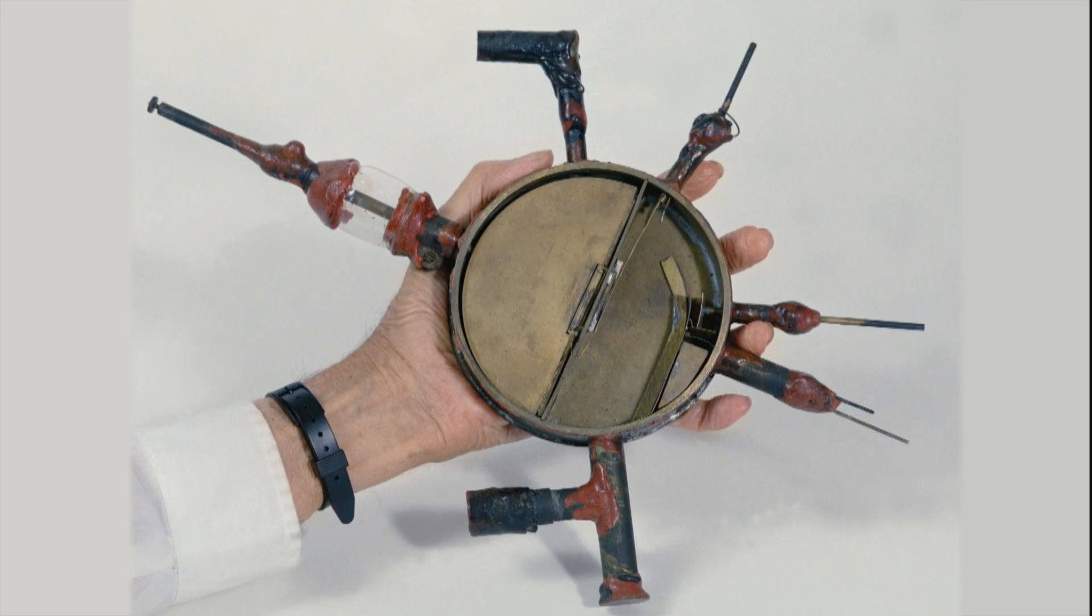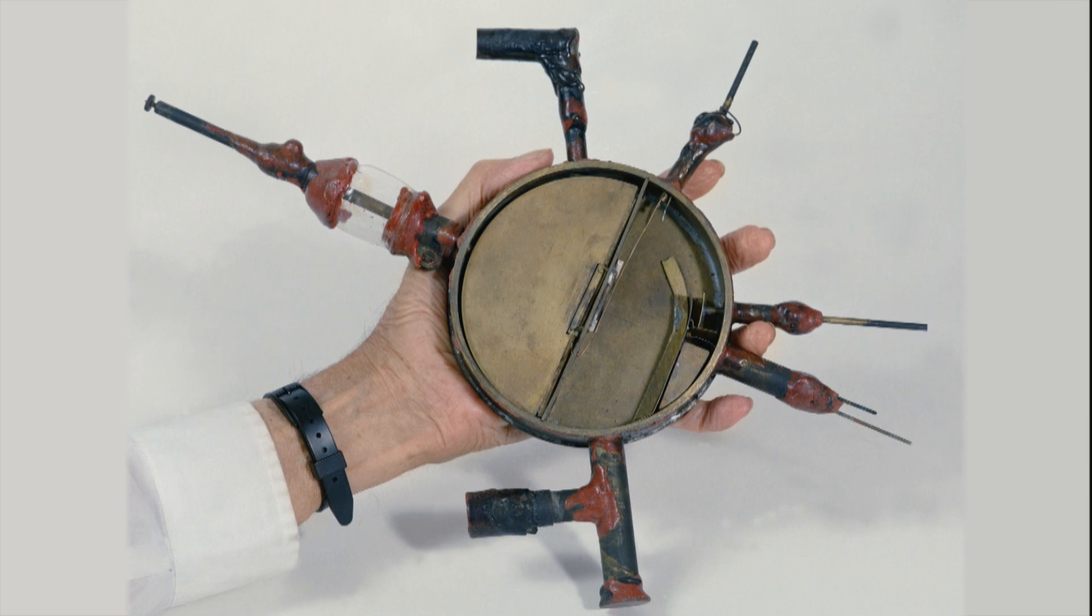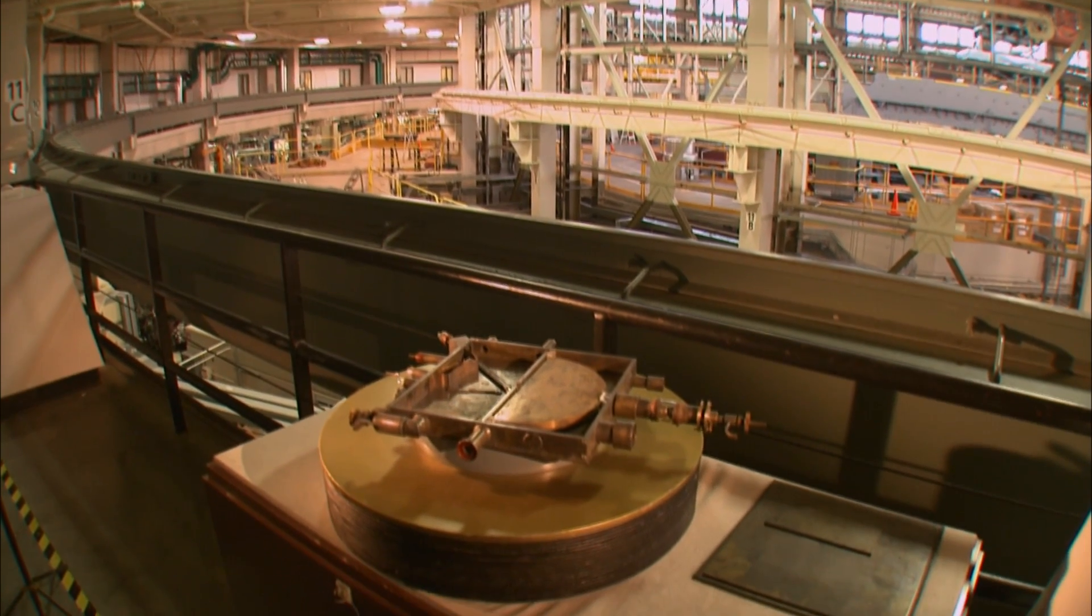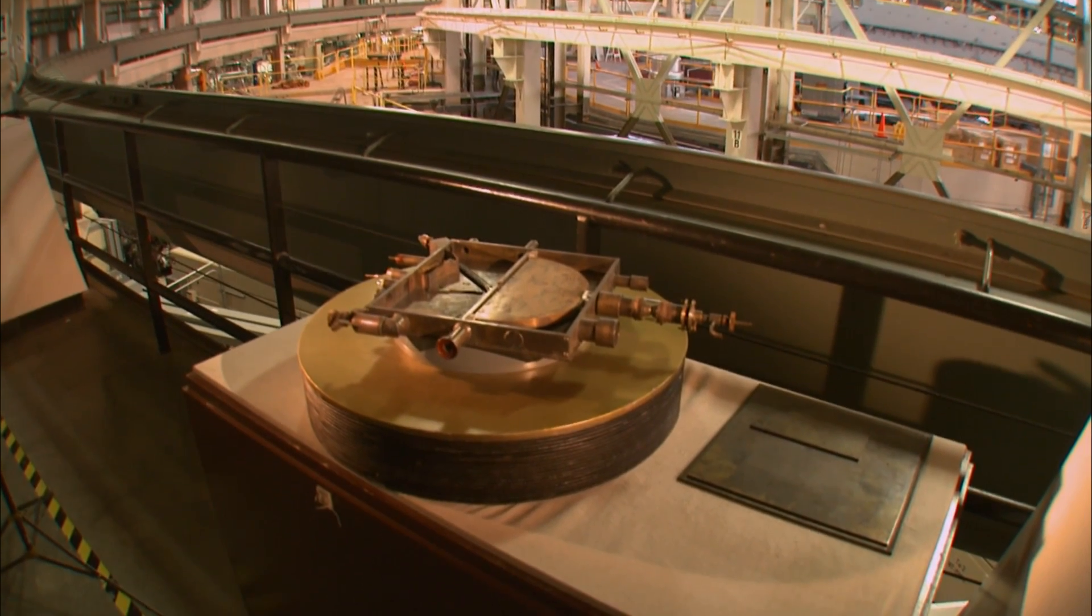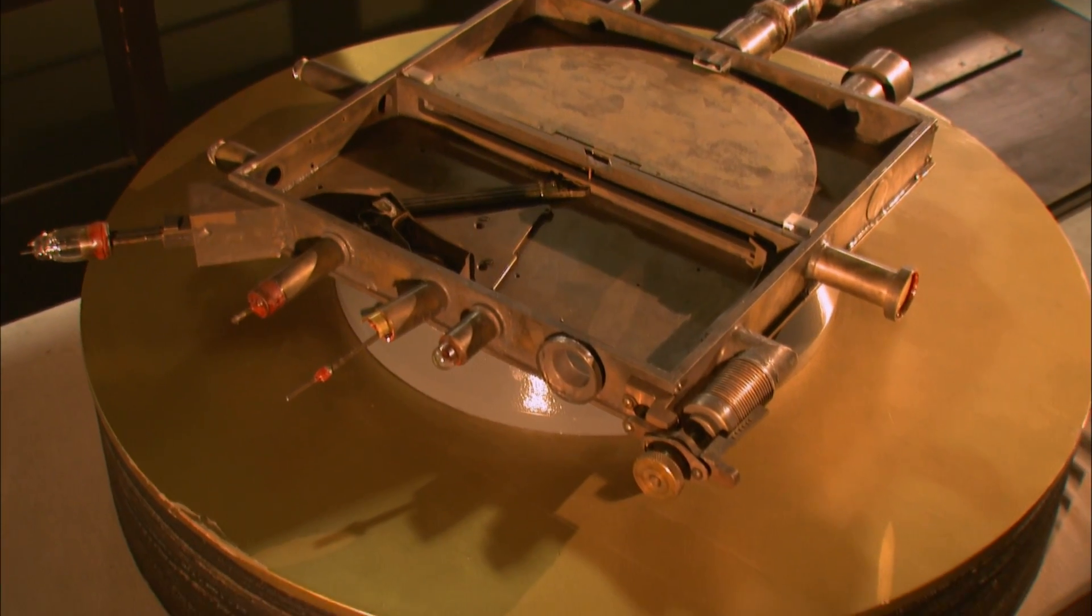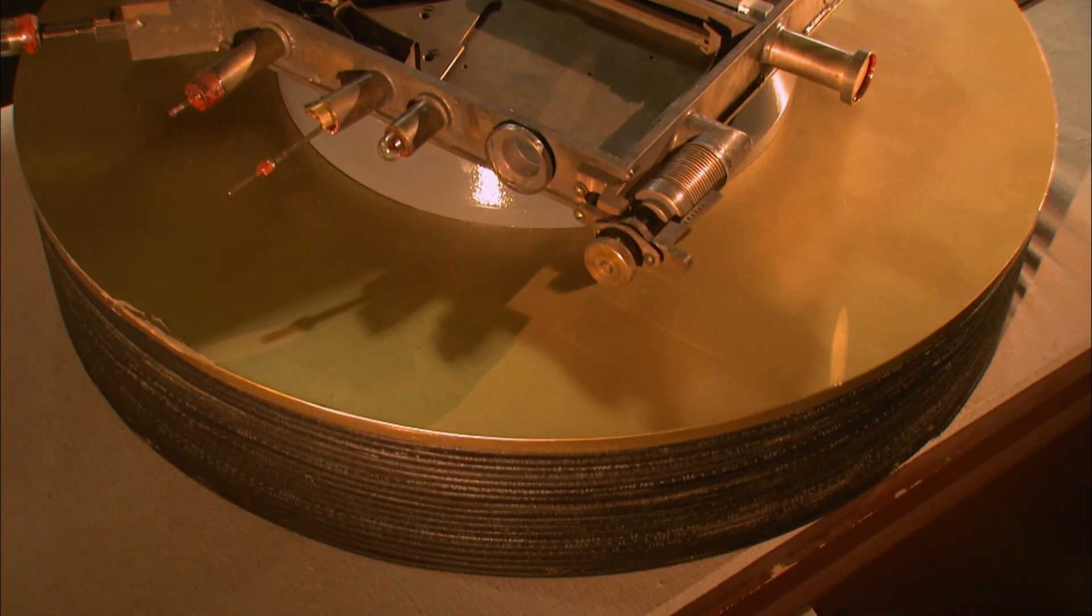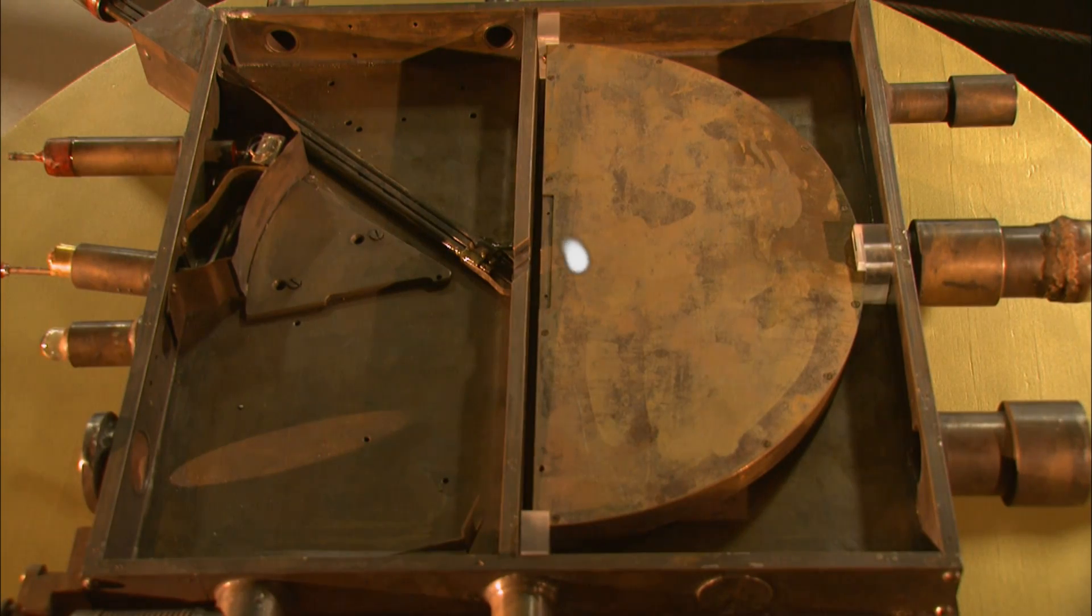Lawrence's first cyclotron fit in the palm of his hand. The machine's second iteration fit on a table. To get the charged particles moving fast, Lawrence bent them into a circular path using two magnets like this one. Then he gave the particles regular pushes to increase their velocity.